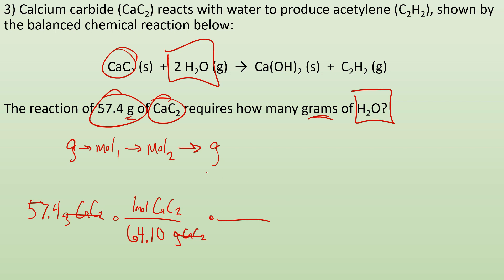So let me set up the next conversion factor. Now I got to go moles to moles. And this is going to be from the equation. So if I got moles of calcium carbide on top, I need it on the bottom to cancel it out. So one mole of calcium carbide, how to get one? Because it has a one there.